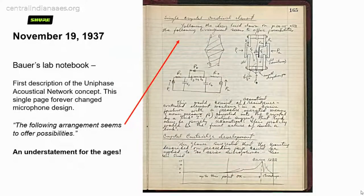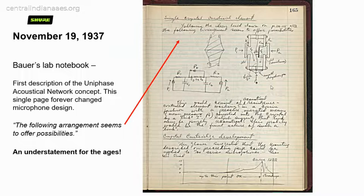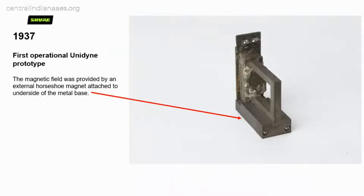November 19th, 1937 is a very important day — this is a page from Ben Bauer's handwritten lab notebook, his first description of the uniphase acoustical network. In the middle is the electrical equivalent of the acoustical network. At the top it says 'the following arrangement seems to offer possibilities' — quite an understatement. The first Unidyne prototype had the mic grill, diaphragm, and moving coil visible, but since magnets were expensive back then, Ben simply attached a horseshoe magnet to the bottom of it — and that was the first working prototype.